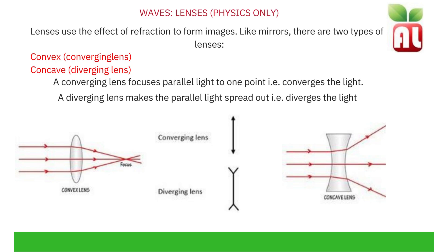Lenses use the effect of refraction to form images. There are two types of lenses: convex and concave. Convex are converging lenses and concave are diverging lenses. Convex lenses bend outwards and concave inwards. A converging lens focuses parallel light to one point — it converges the light. A diverging lens makes parallel light spread out — it diverges the light.